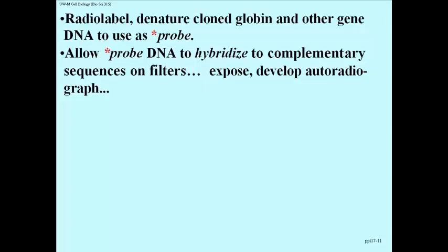We allow the probe DNA — this radioactive DNA after denaturing — to hybridize. Hybridizing means that if the two original parent strands of DNA were artificially separated and two new potentially complementary strands are introduced that do form H-bonds, they've made a hybrid DNA structure. So we allow the radioactive probe DNA to hybridize to complementary sequences on the filters, if they're there. Then we expose and develop an autoradiograph, which will tell us which of the spots is radioactive and how radioactive they are.